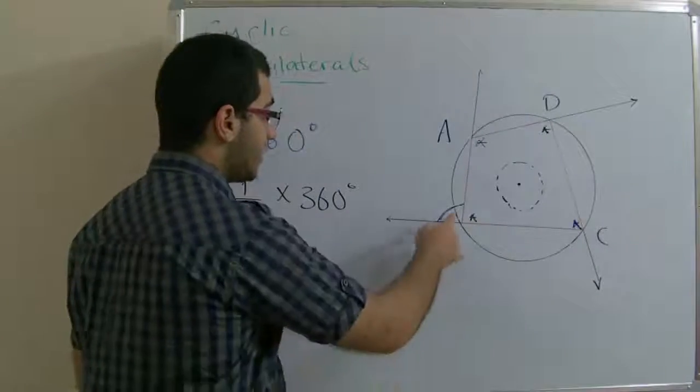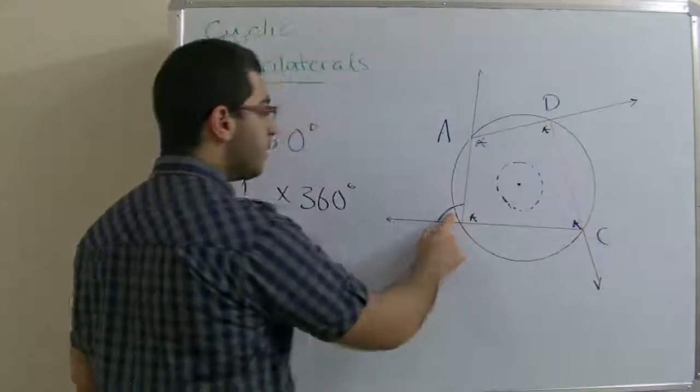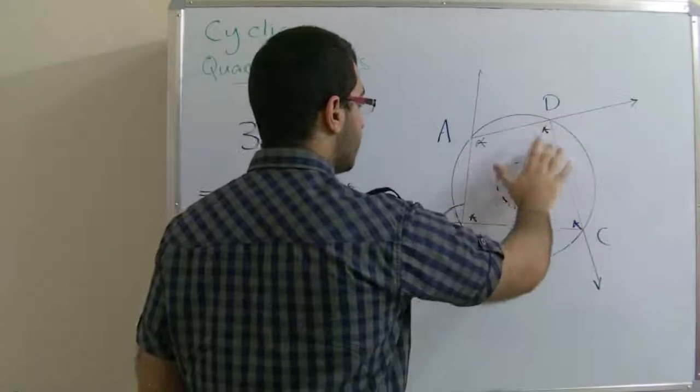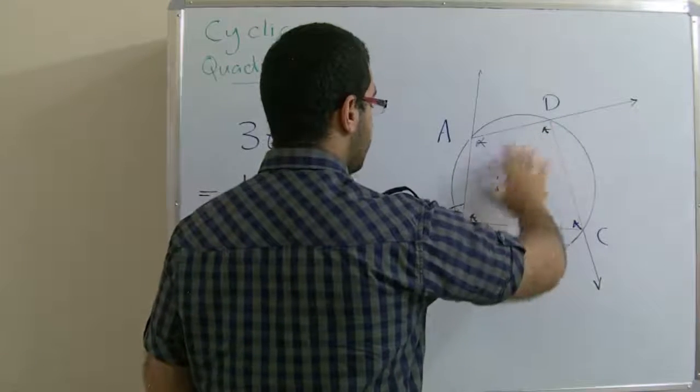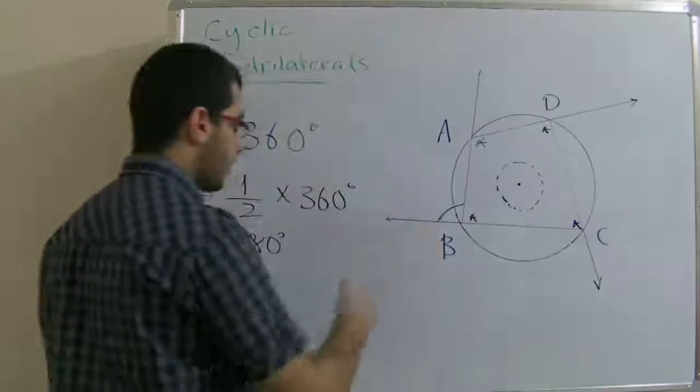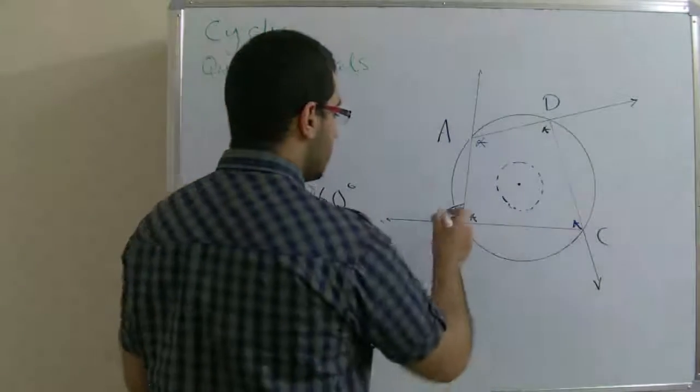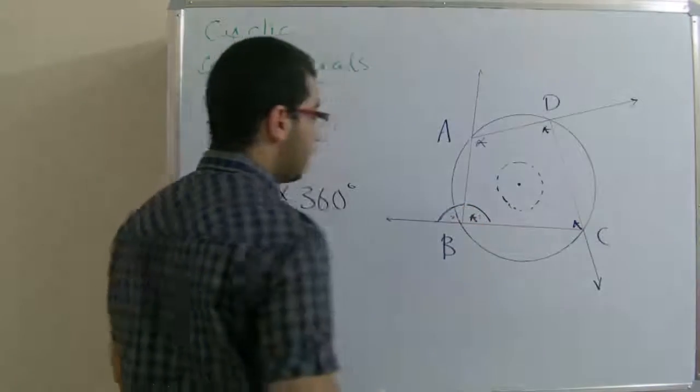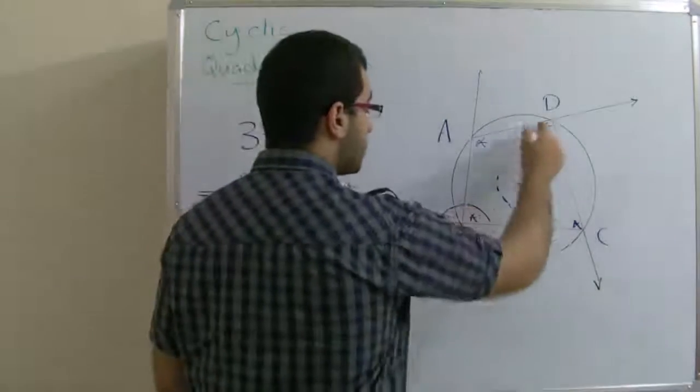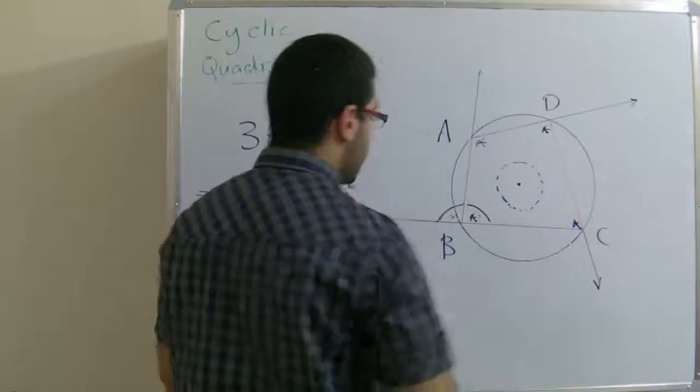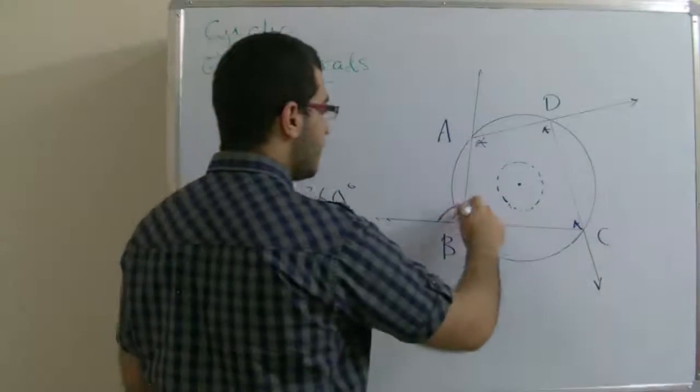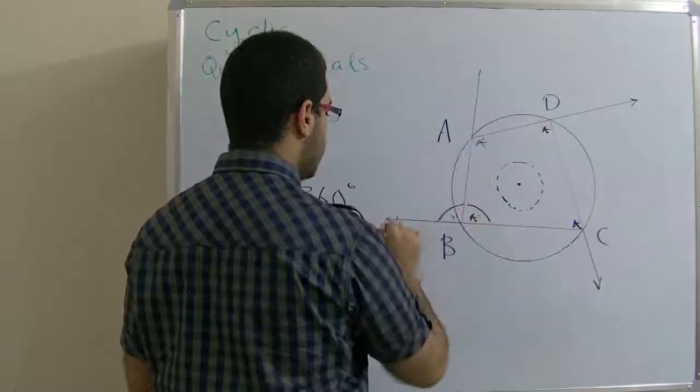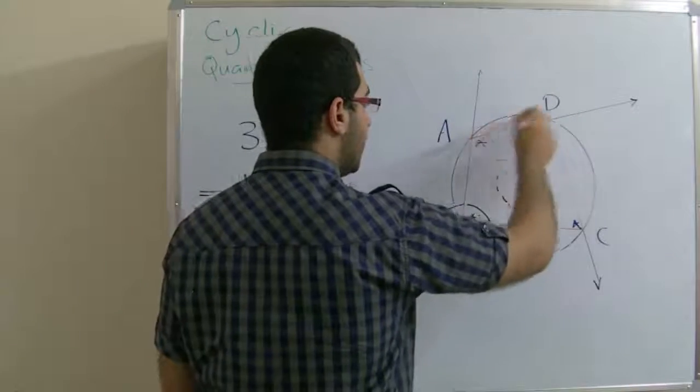Also, the exterior angle here equals the measure of the angle opposite to its supplementary angle, because those two angles together give 180 degrees. If we subtract this, we'll find that angle ABC equals angle ADC.